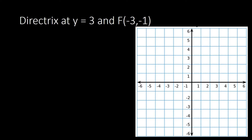First we are going to locate those on the coordinate plane and draw the different parts. We have directrix at y equal to 3 — we draw our line passing through that value. The focus is at negative 3, negative 1, so negative 3 on x and negative 1 on y. Since the focus is below the directrix, the opening of the parabola is downward.